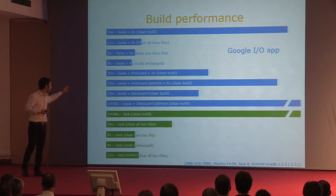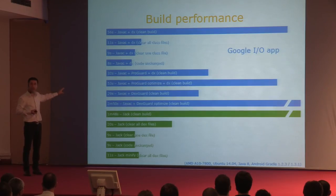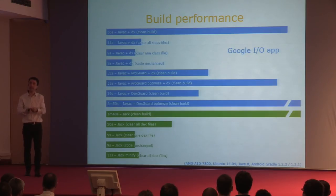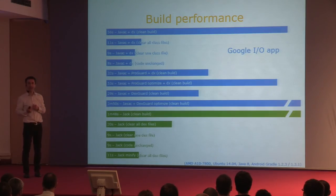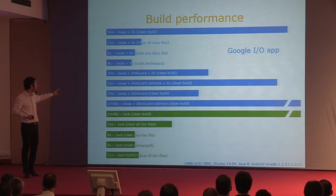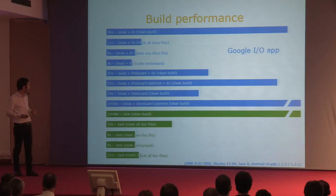The reason is that ProGuard, very early on in the build process, makes the application smaller, and then the rest of the build process has an easier job and can create the final results faster. Just out of curiosity, I've also done that with DexGuard. DexGuard is similar to ProGuard but specialized for Android and focuses on protection against reverse engineering—and because of its specialization and streamlining, it's a bit faster than ProGuard.